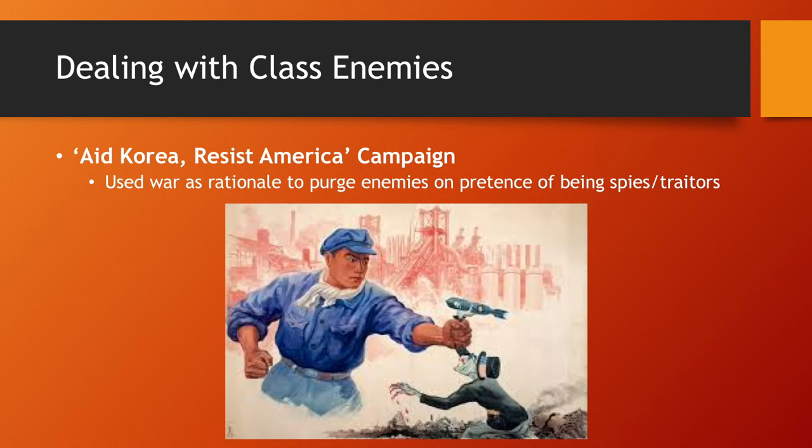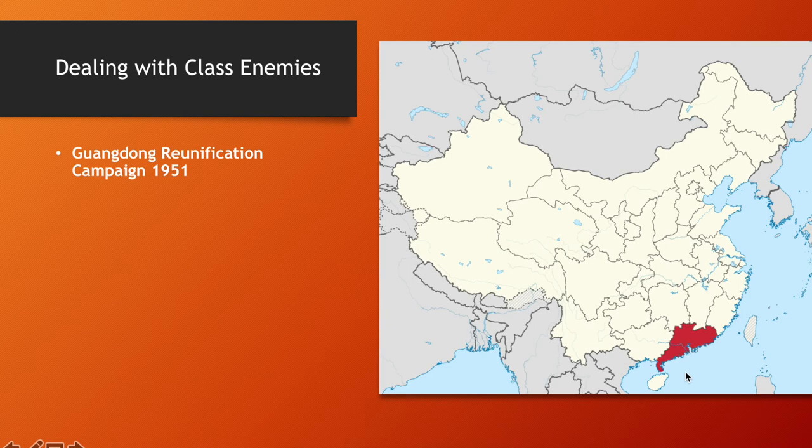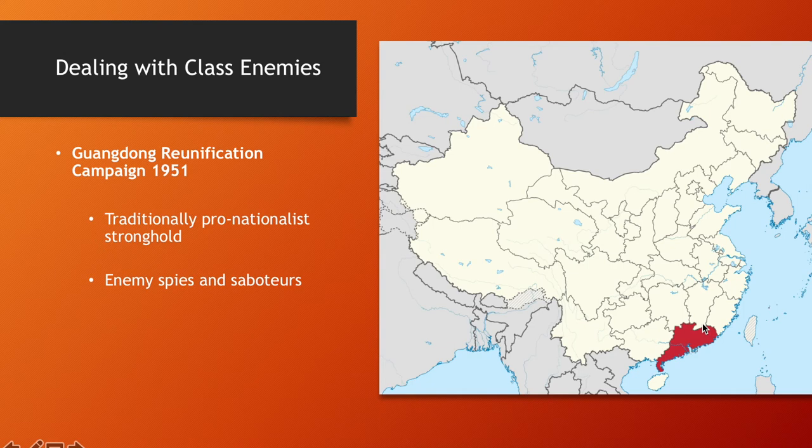The reunification campaign, specifically in Guangdong — after the civil war, the Nationalists fled to Formosa, Taiwan, and it was rumored they were using Guangdong as a base for spies and saboteurs to retake China from the communist government. It was traditionally a pro-Nationalist stronghold, and the CCP executed a number of people there.